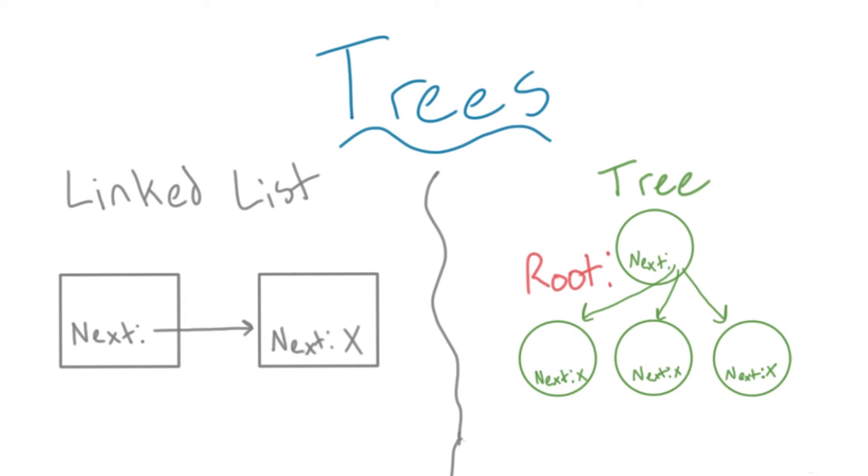A linked list is often drawn horizontally, but a tree is normally drawn vertically like this. Just like a linked list, each element on a tree contains some data. The individual elements in a tree that contain values are often called nodes.